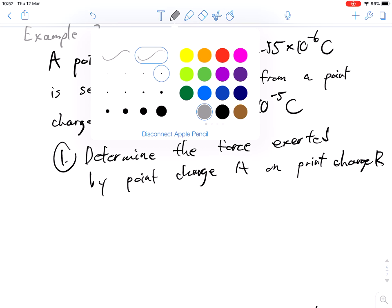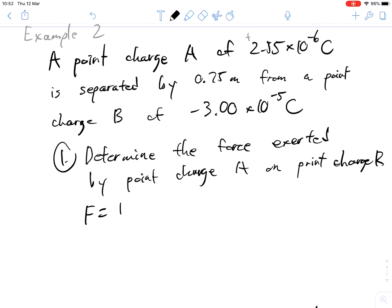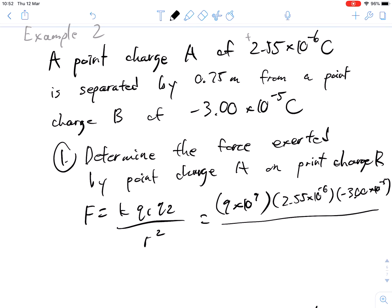So let's try to get rid of some calculations. F equals K Q1 Q2 over R squared. K is 9 times 10 to the power of 9. I'm going to skip writing the units because I don't have that much room. So 2.55 times 10 to the power of negative 6. Negative 3 times 10 to the negative 5. And that's divided by 0.75. And we have to square that. And the result is going to be, I think it's 1.22, or negative 1.22. Negative 1.22 newtons.